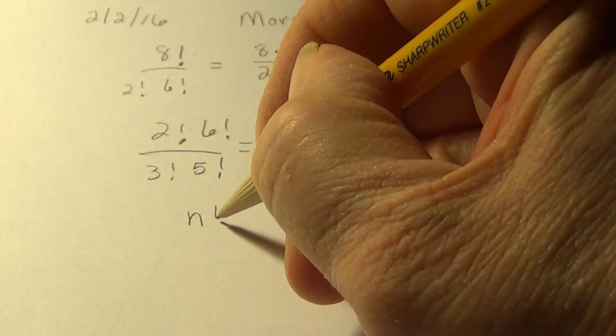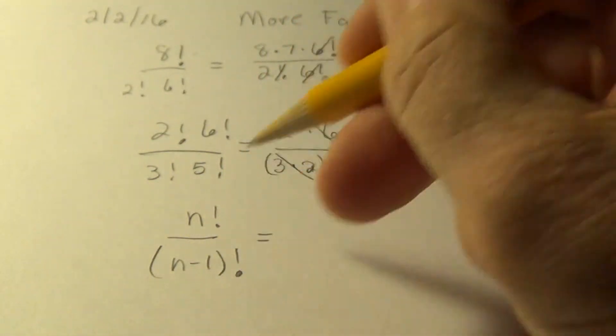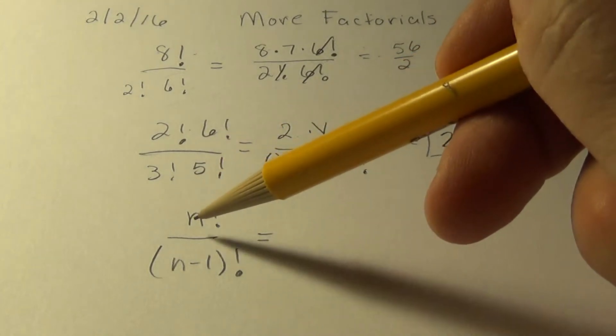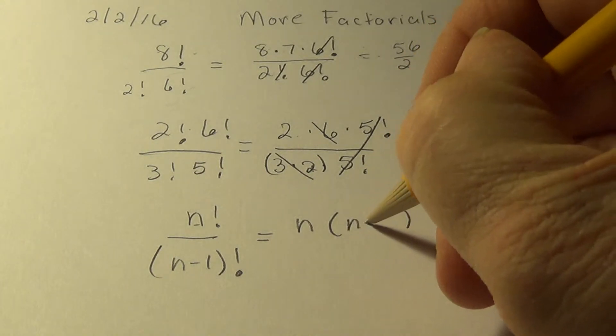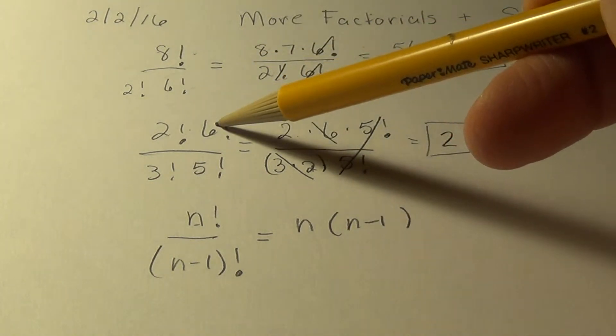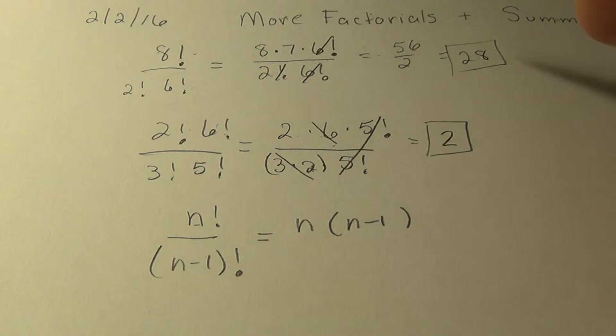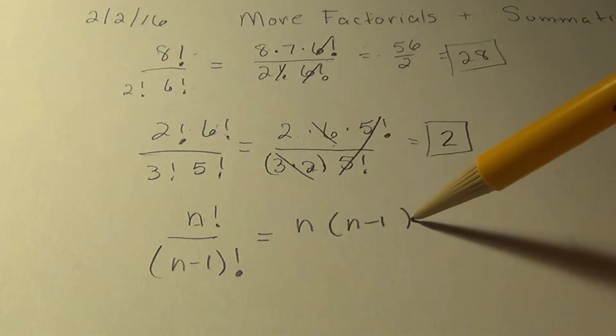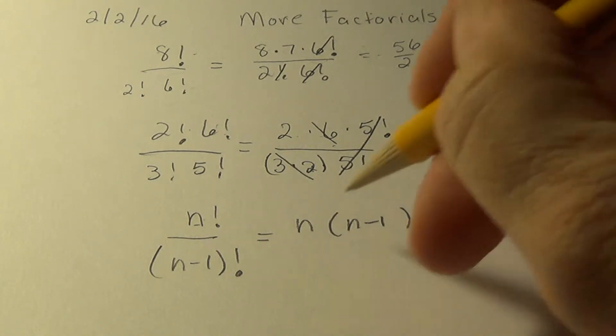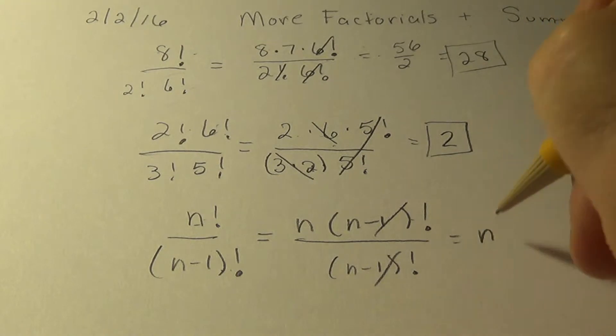The last one in factorial land is n factorial over n minus 1 factorial. So here I'm not told what the number is, but I know that n factorial is n times what? n minus 1. Didn't we change 6 factorial to 6 times 6 minus 1 is 5 factorial? So I'm going to do a similar thing. I'm going to start with n and multiply it times n minus 1 factorial. Keeping an eye on the prize here, I'll stop there, and I get an n. So that little trick will help you tomorrow.